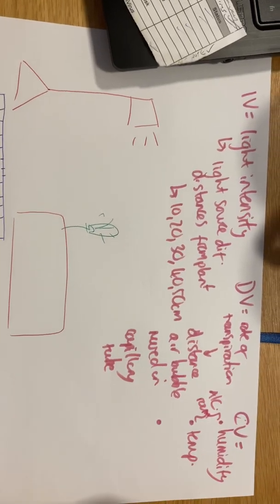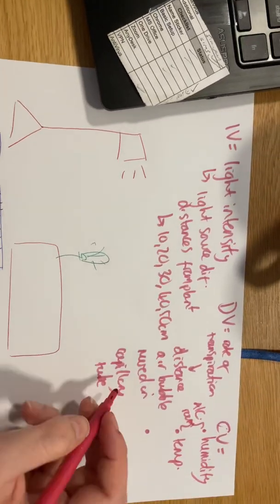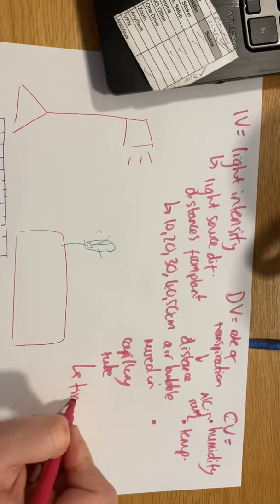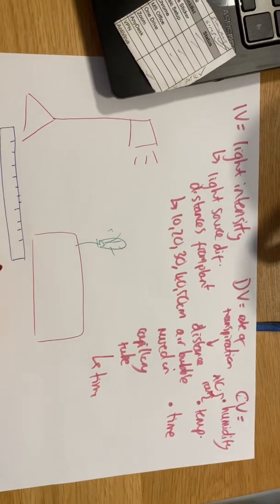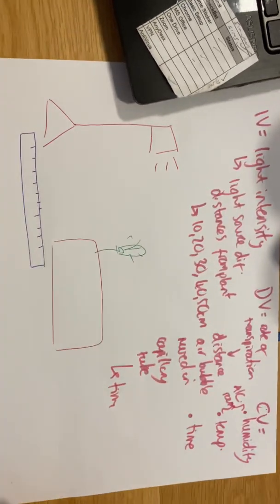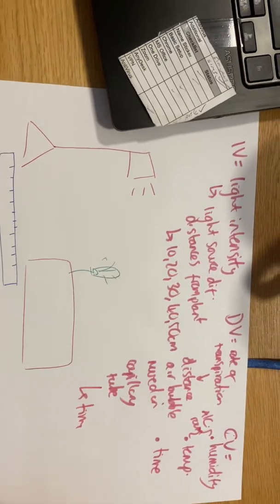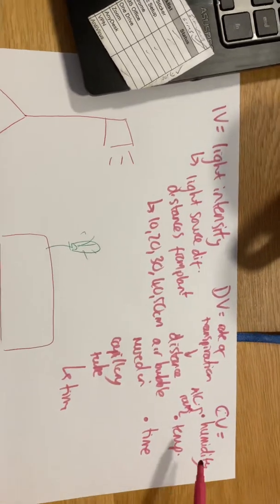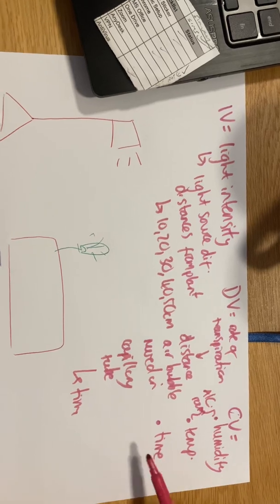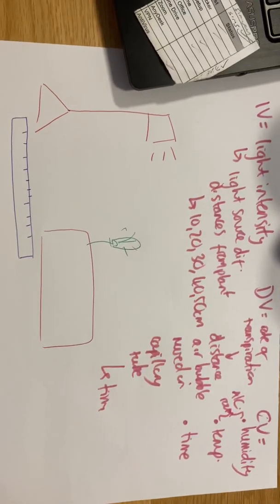We can maintain the temperature - ensure our temperature is set at 24 degrees, something like that, and humidity can be the same. Another control variable that we need to think about is our time. I wouldn't let the first repeat do it in 30 seconds and the next one leave it for four hours. So humidity, temperature, and time are going to be our control variables.